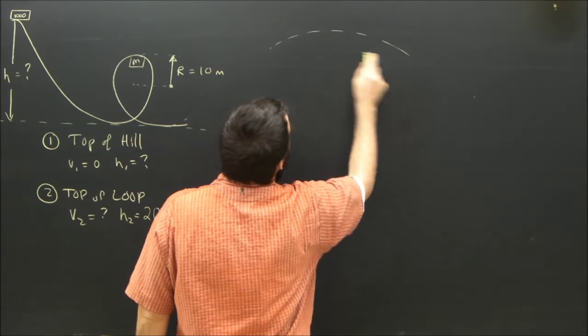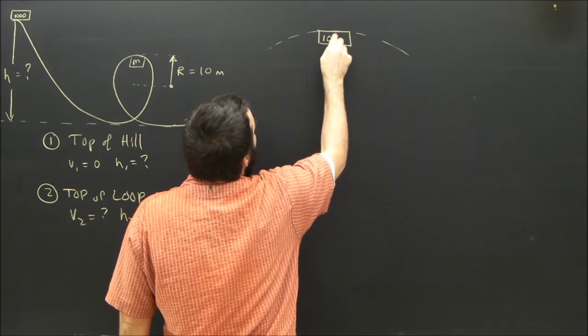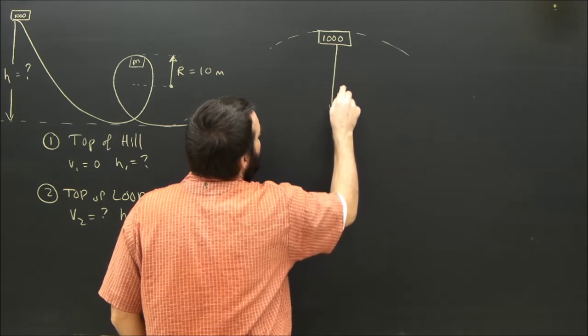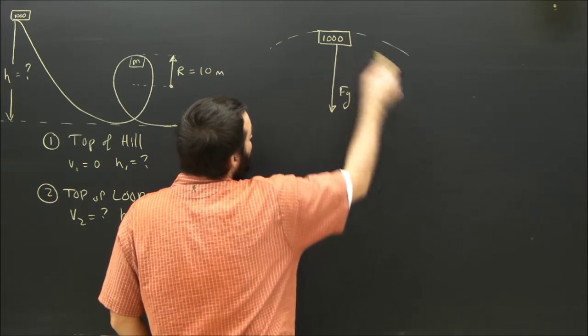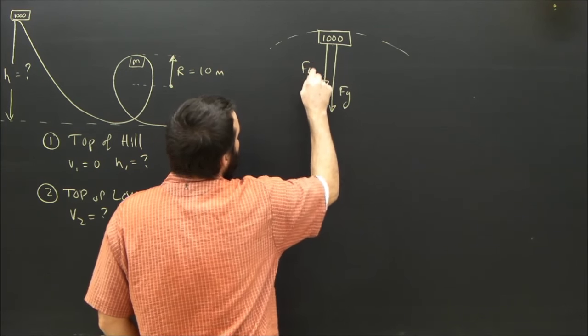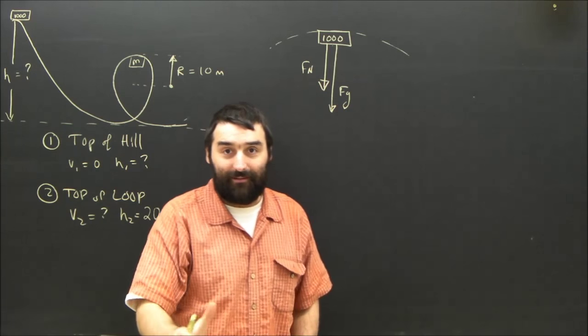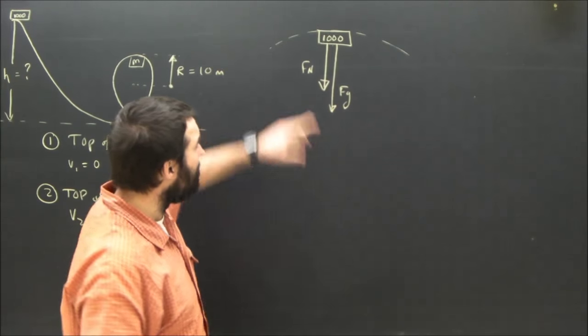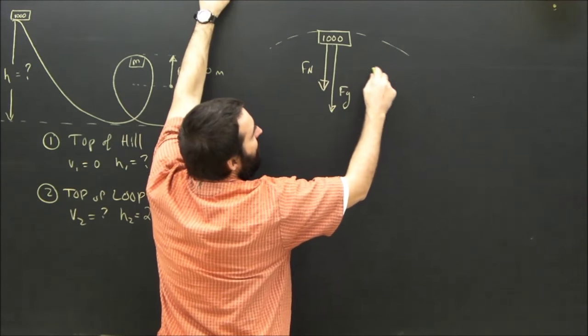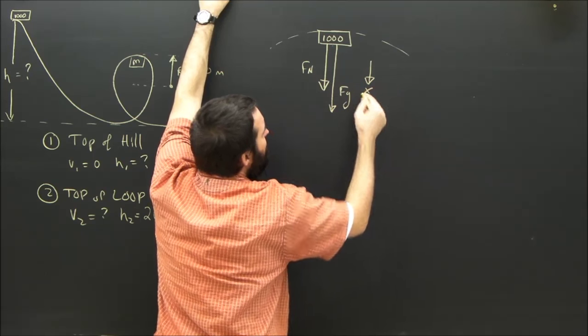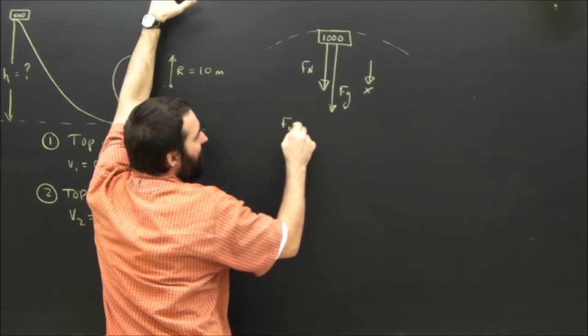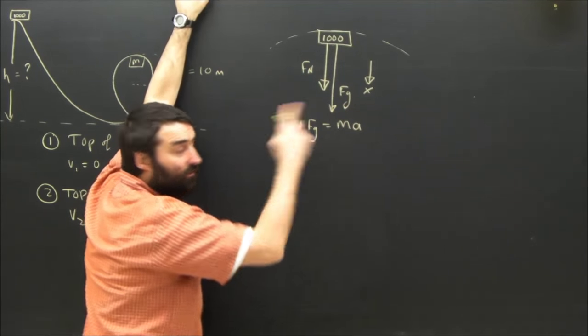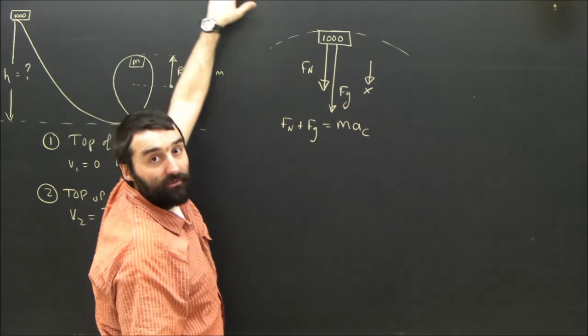So we'll draw a free body diagram of the roller coaster at the top. What forces are there? Well, there's gravity, which is down. And as it goes through the loop, there's also going to be the normal force. You might well be tempted to leave that off your diagram altogether because you already know, if the roller coaster falls, the normal force will be zero. I'm going to leave it on there for a second. Okay, so down towards the center is x, and my x equation is that fn plus fg equals ma. But it's going in a circle, so it equals mac, centripetal acceleration.